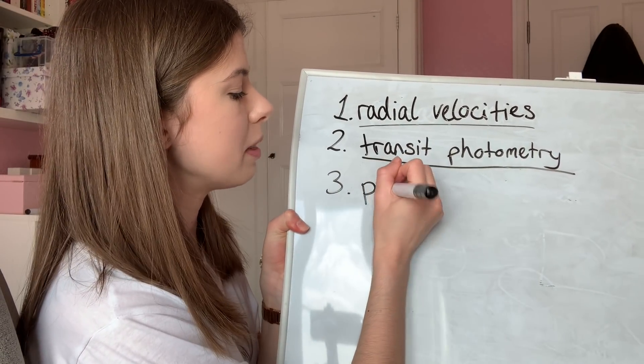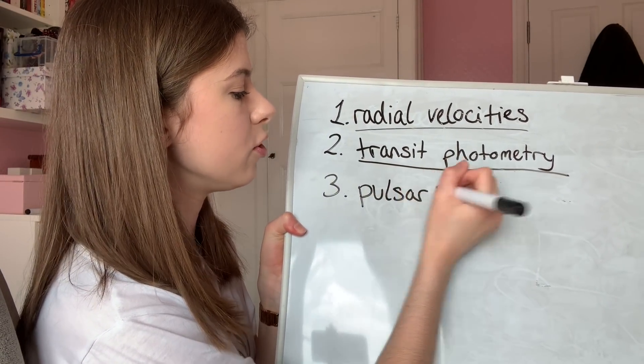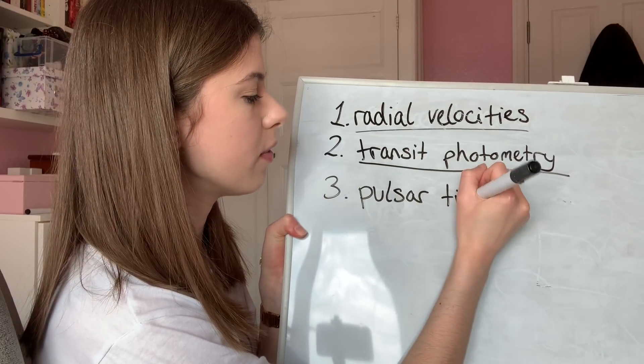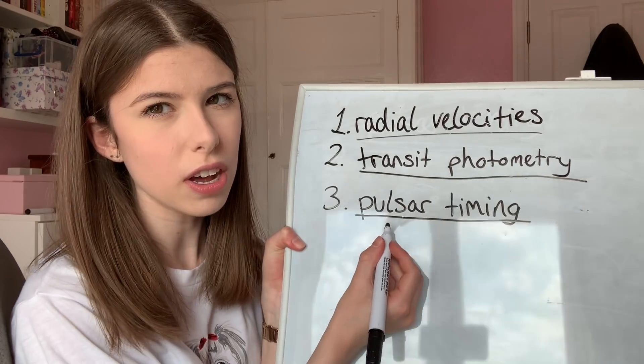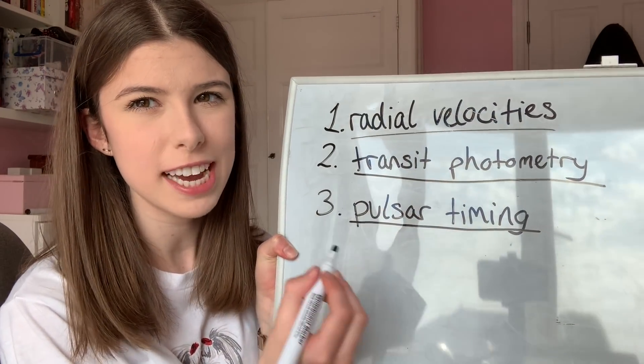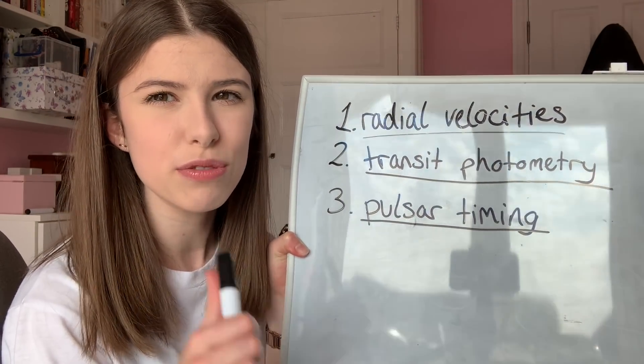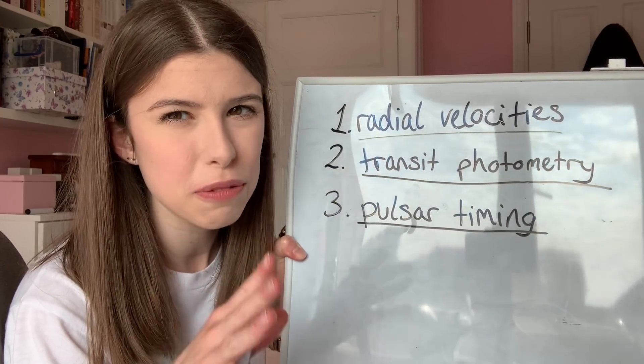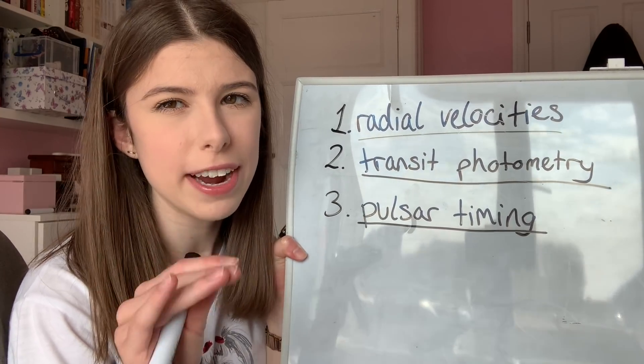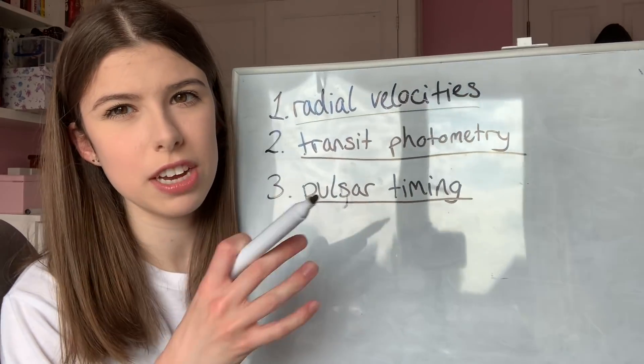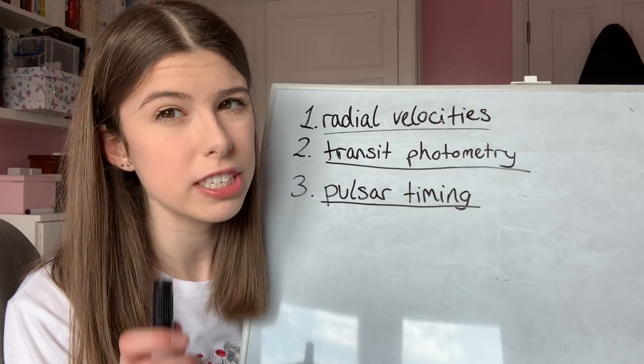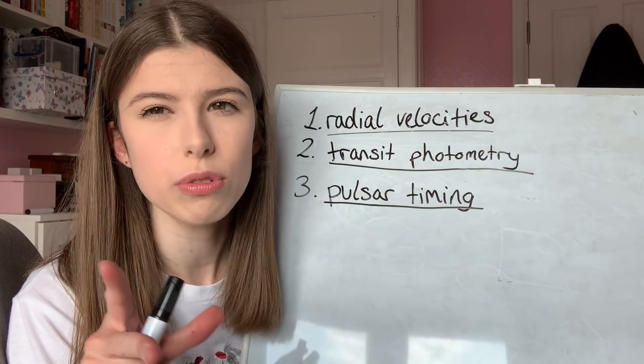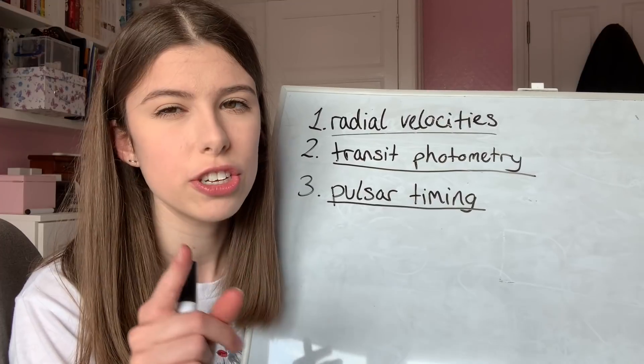We've got to give a mention to this next method of exoplanet detection because it was the method used to detect the very first exoplanet, and that is pulsar timing. Now pulsars, as I mentioned earlier, are rotating neutron stars, and they emit radio waves - a form of electromagnetic radiation - at very regular time intervals. We can measure the time between arrivals of these radio waves on Earth.